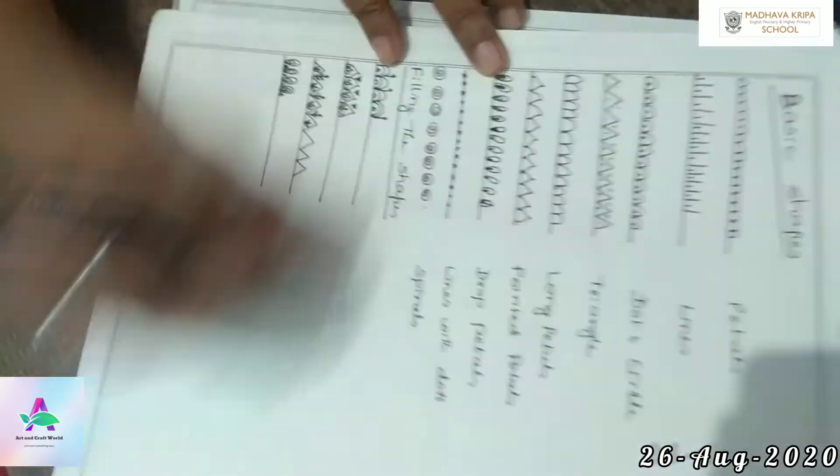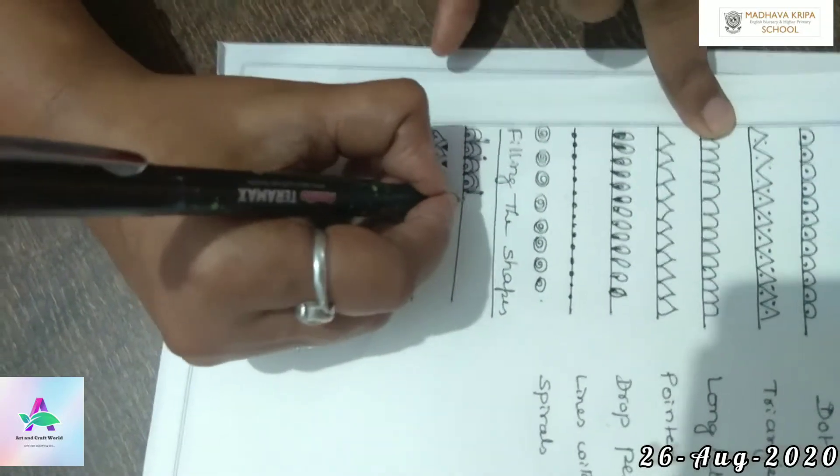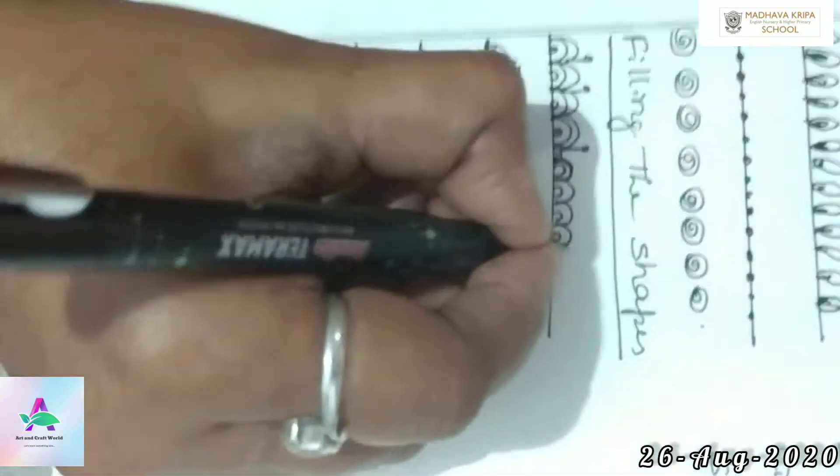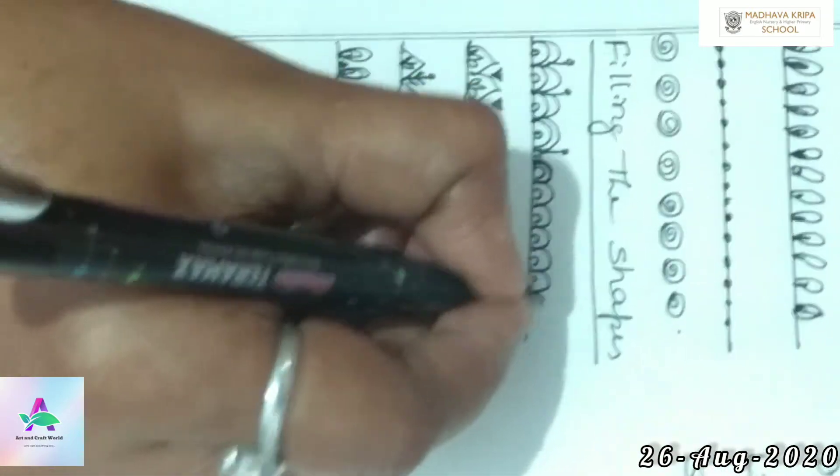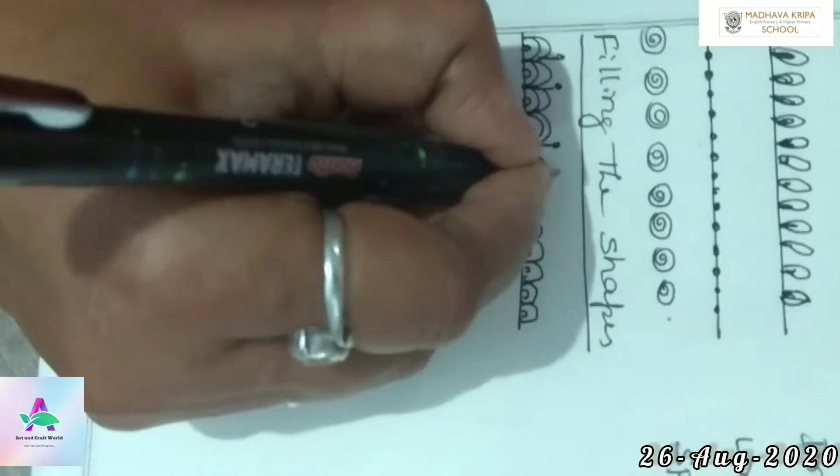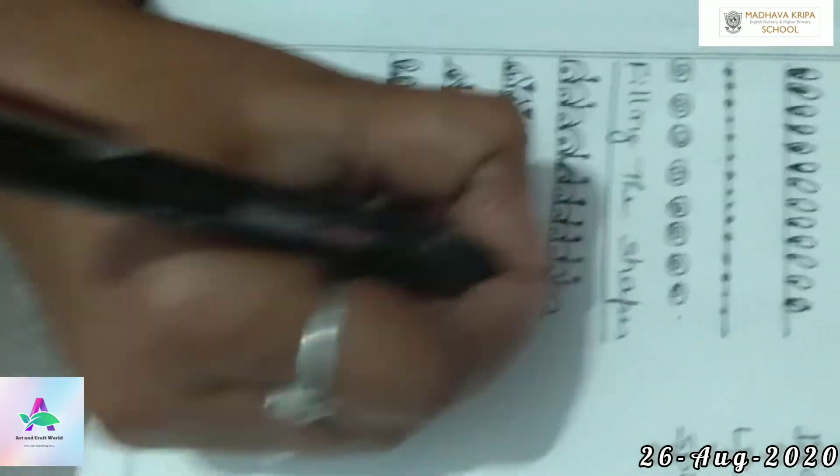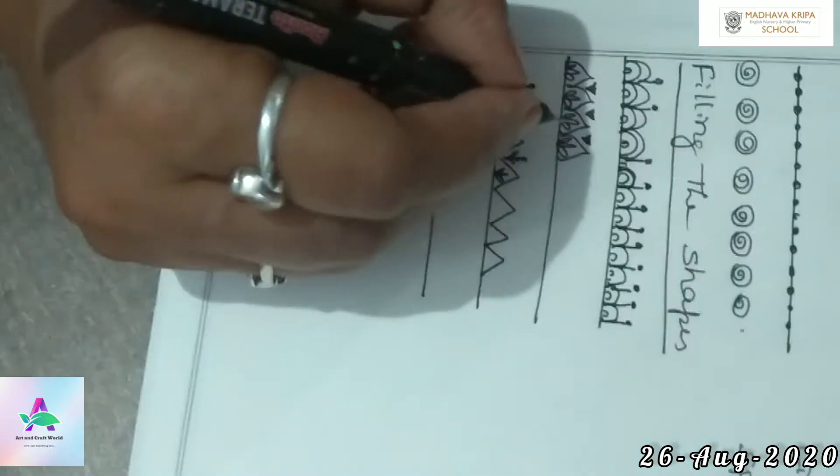Like this, now filling the shapes. See, same as above: first of all you have to draw basic forms, then fill it with other shapes, combination of two to three shapes.